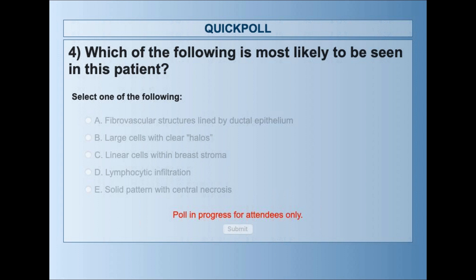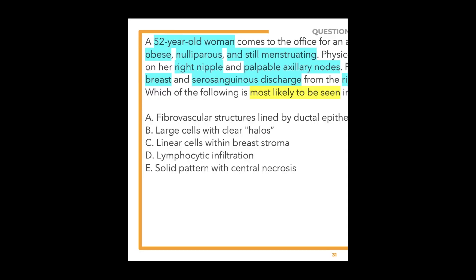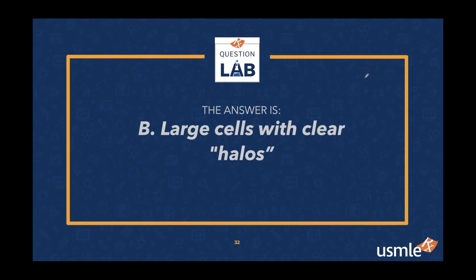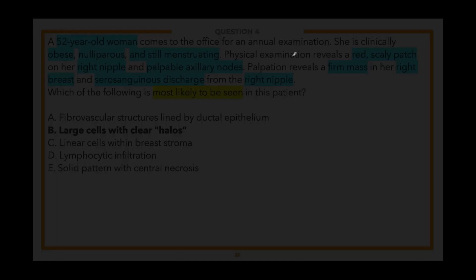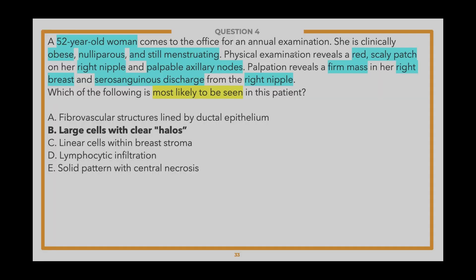For the first time in Question Lab history, a three-way tie for first place: 28% selected A, 28% selected B, and 28% selected D. The correct answer is B — large cells with clear halos. Once you get that first step right, the second step becomes more straightforward.